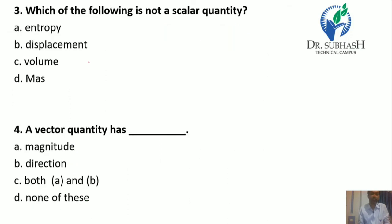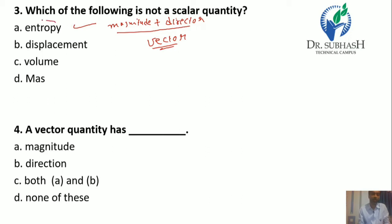Question 3: Which of the following is not a scalar quantity? Entropy — it has magnitude plus direction, and a quantity which has magnitude plus direction is known as a vector quantity. So entropy is a vector quantity, and the answer is A.